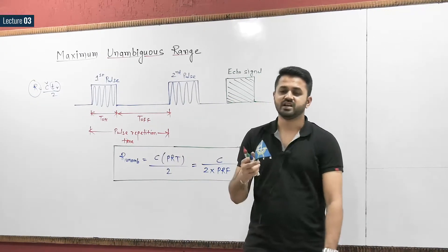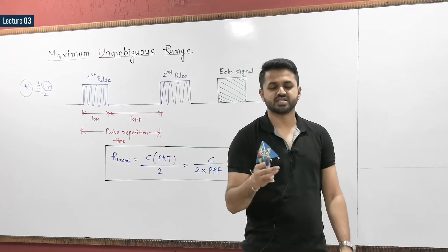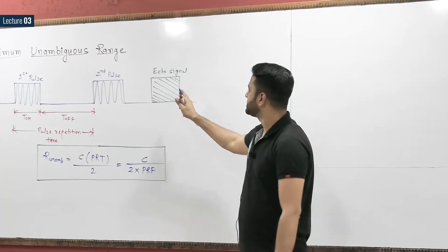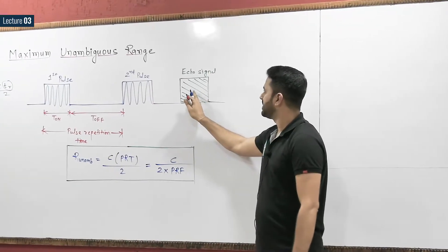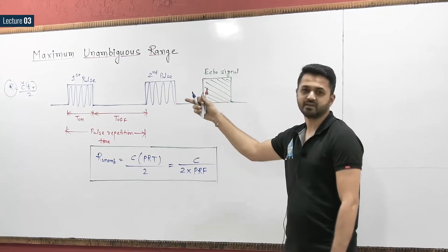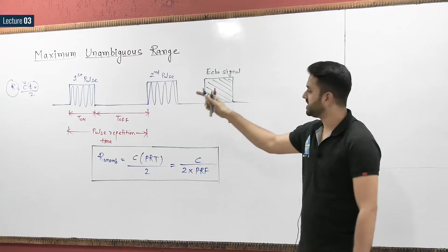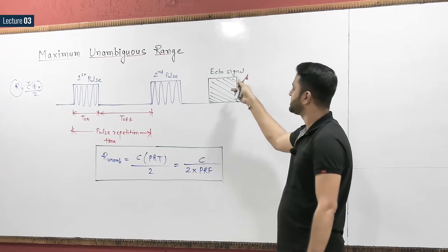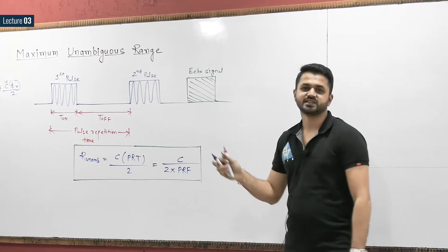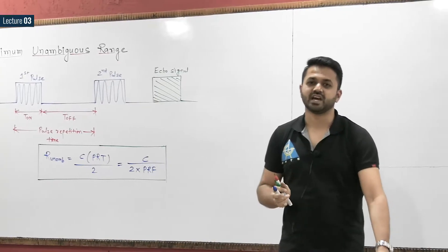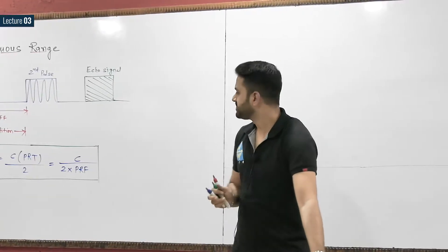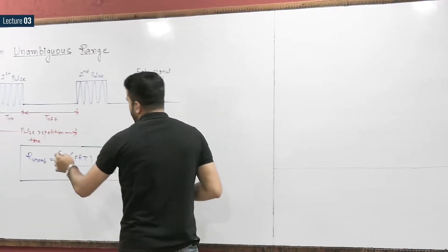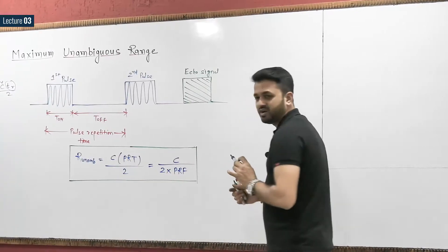If you want to calculate the range without any ambiguity, use this formula. The echo signal received after transmitting the second pulse is called the second time round echo — that is, after transmitting the second pulse we get the echo. That is known as second time round echo. The maximum unambiguous range formula is straightforward.